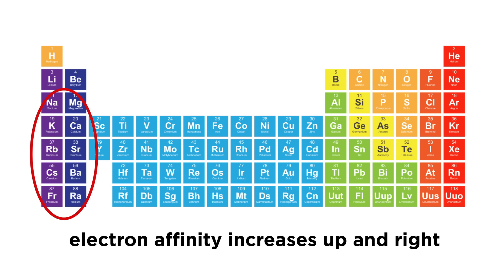Looking at the opposite corner, these elements don't want to gain electrons. They would rather lose them. Exceptions to this trend happen for exactly the same reasons as the exceptions to the ionization energy trend.